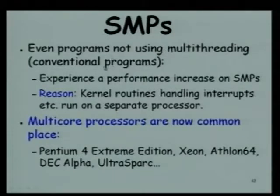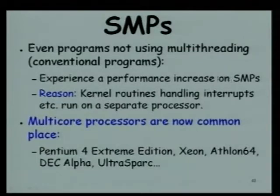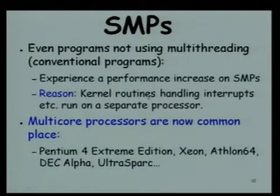What about running conventional programs like a C program on an SMP machine? SMP machines have become common everywhere - you do not even find a uniprocessor machine in the entire lab, and even Intel has stopped manufacturing single processor machines. If you run a C program which was running on a uniprocessor, would it run faster on SMP? The answer is yes - it will experience a performance increase, because even though there is a single thread of execution, the kernel routines can run on a separate processor. As a result, a single-thread program can also run faster.